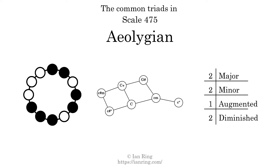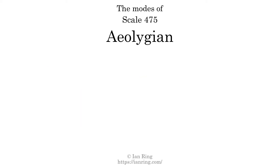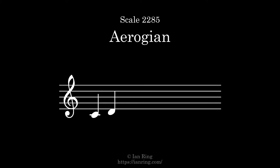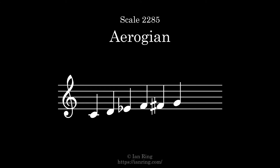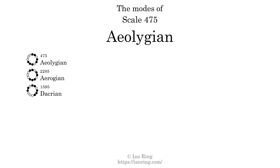Here is a Hamiltonian path of parsimonious voice leading that uses all the triads. This scale has seven modes. The first mode is itself. The second mode is scale 2285, also known as erosion. It sounds like this. The third mode is scale 1595, also known as dacrion.